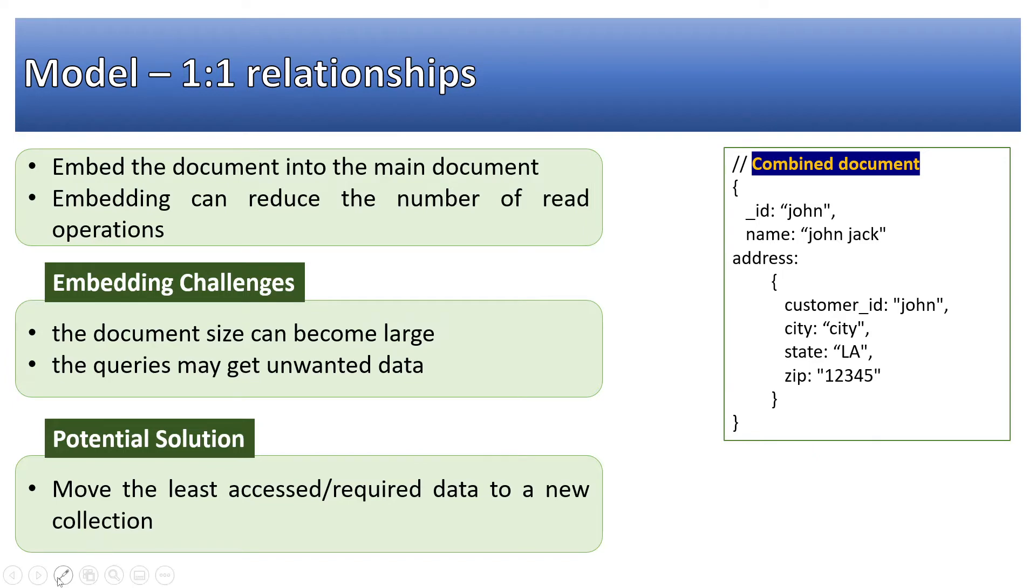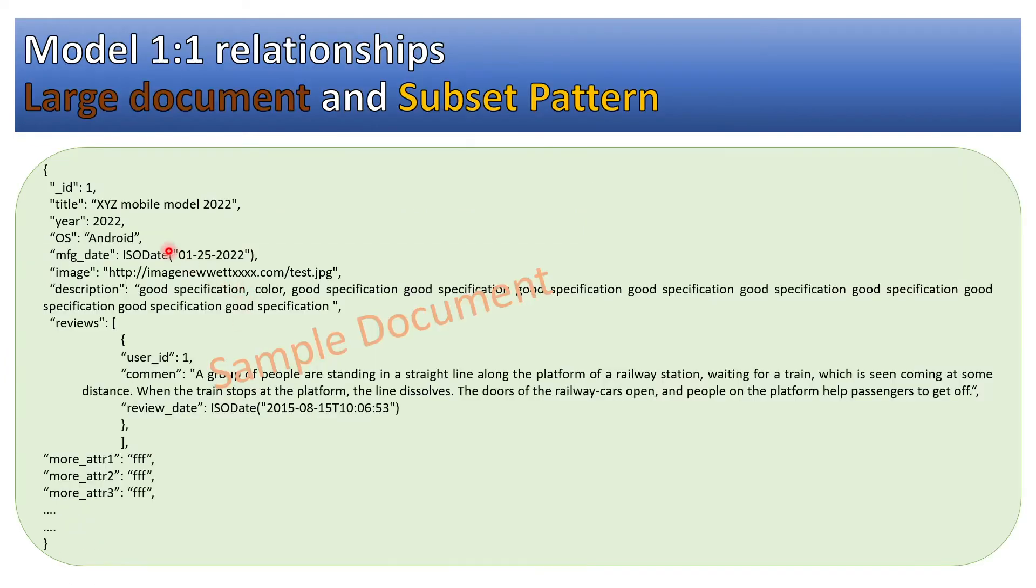This is the large document here to model one-to-one relationships using embedded document style. I am going to introduce the subset pattern. If you see here, this is the example which is showing that data in a single document may grow very large.